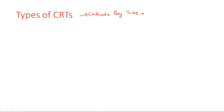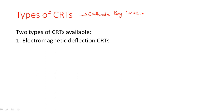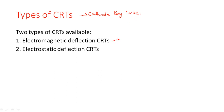There are two types of cathode ray tubes available: electromagnetic deflection CRTs and electrostatic deflection CRTs. By looking at the names themselves, we can understand that one is based on a magnetic field and the other is based on an electric field.